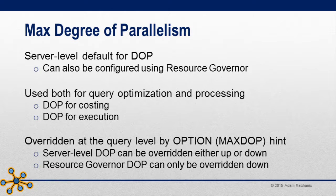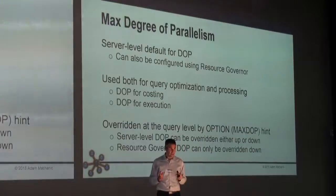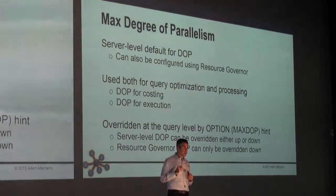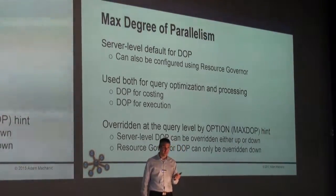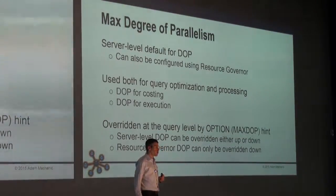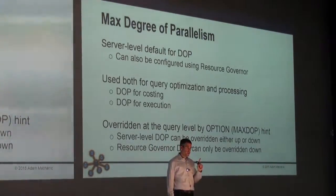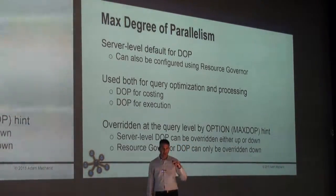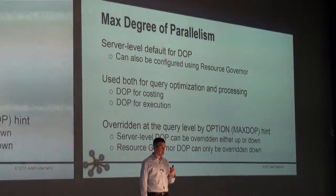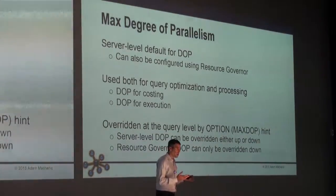If you've set a server-level maxDOP and you've only set it at the server level, the maxDOP hint at the query level can be used by any user to override either up or down. That means if you have the server-level maxDOP set to four, any user can do OPTION MAXDOP 6 or OPTION MAXDOP 8. If you want to limit your users — which I think is a good idea — to keep them from going above the server-level maxDOP, you unfortunately need to leverage resource governor. The workload group DOP cannot be overridden up, so if you have it capped at four, that's a hard cap.